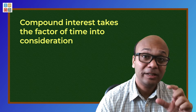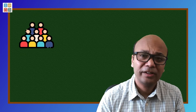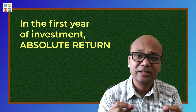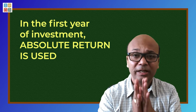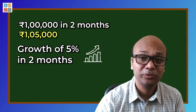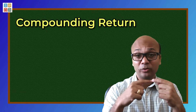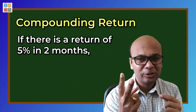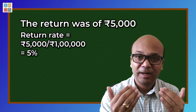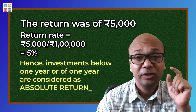Compound interest को annualized return या geometric return भी बोला जाता है। यह over a period of time बताता है कि investment growth में time वाला factor लेता है, जिससे आपको perspective पता चले — you can compare investments whether they are good or bad. अब question आता है: कब absolute return यूज़ करें, कब compounding return? Simple rule: एक साल और उससे कम duration में only absolute return consider करें। Example: 1 लाख रुपए अगर 2 महीने में 1,05,000 हो गए — absolute return 5% है।